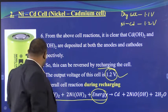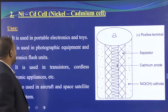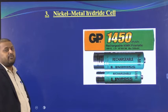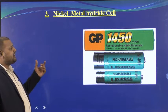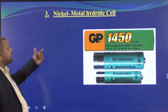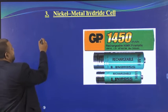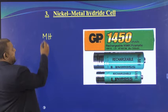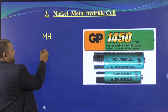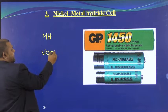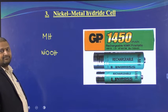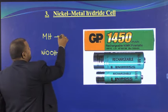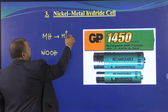Next is the nickel metal hydride cell. What is common between nickel cadmium and nickel metal hydride? Nickel — meaning NiOOH (nickel oxide hydroxide) will be present. Instead of cadmium, we have used metal hydride. Metal hydride (MH) breaks down to give H⁻, the hydride ion — hydrogen having a negative charge.